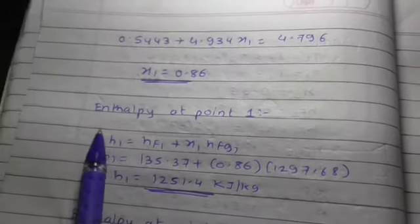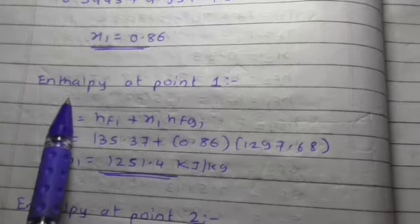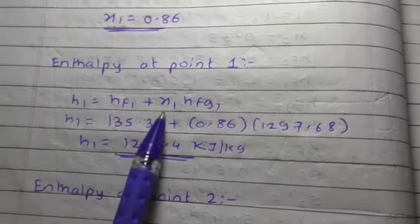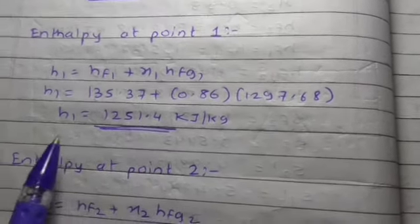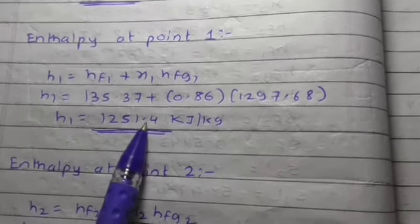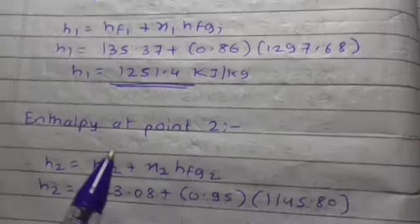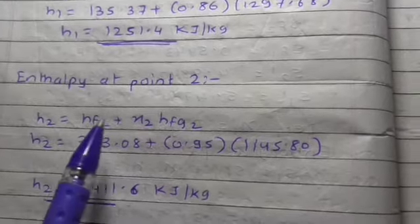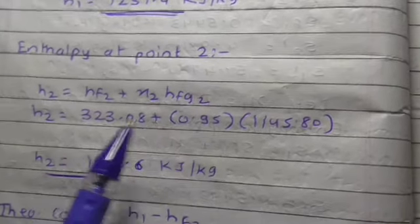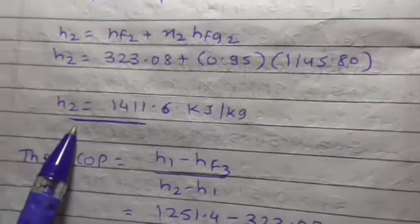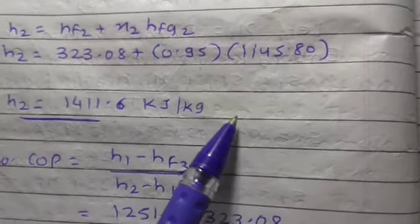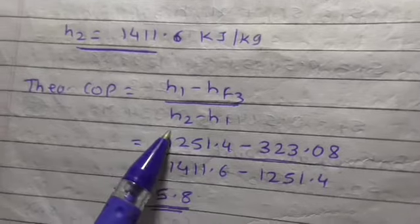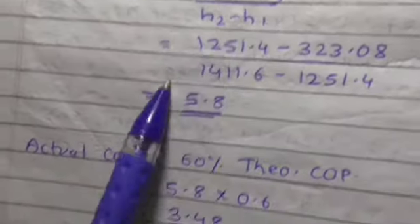After calculating entropies, now enthalpy at point 1: H1 equals HF1 plus X1 times HFG1. All values are known, so we calculate H1 as 1251.4 kilojoules per kilogram. Similarly, enthalpy at point 2: H2 equals HF2 plus X2 times HFG2. We get H2 as 1411.6 kilojoules per kilogram.